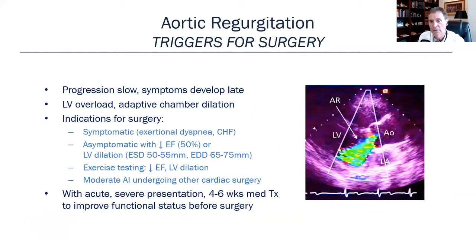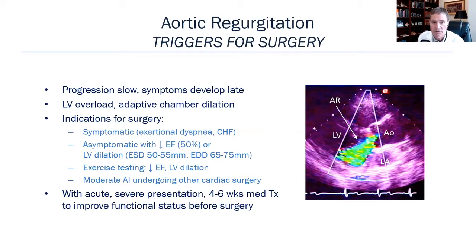We're going to focus on the first two types in regards to repair. What are the triggers for surgery for aortic regurgitation? The progression is slow and symptoms develop late, so we need to look for signs of progressive left ventricular overload and adaptive chamber dilatation. If a patient is symptomatic, that's obviously an indication, but an asymptomatic patient whose ejection fraction has fallen or who has left ventricular dilatation is also someone to consider for valve repair. Exercise testing can show a decrease in ejection fraction and left ventricular dilatation.